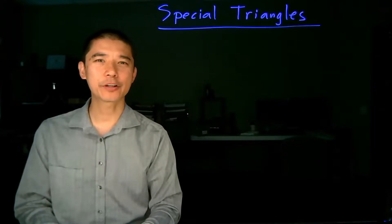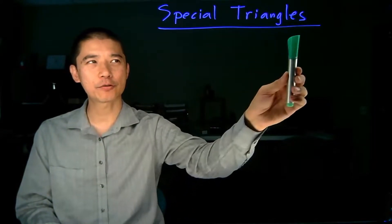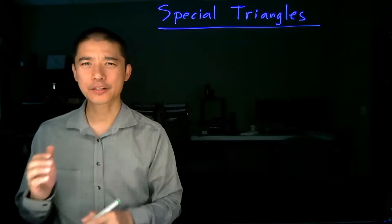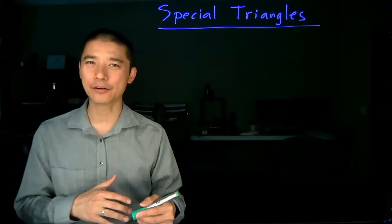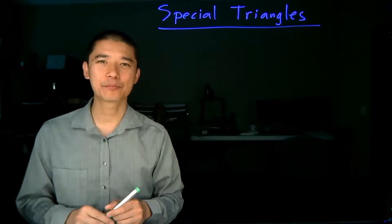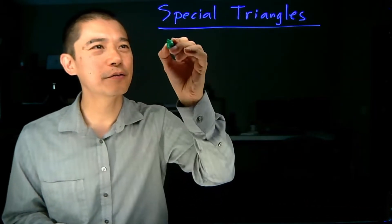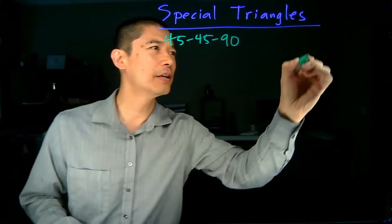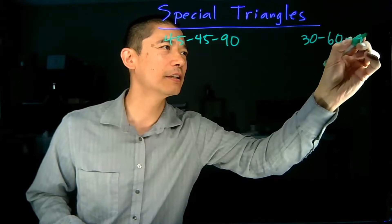Before talking more about trigonometry, we're going to take a quick detour and talk about some special triangles. These special triangles are important to trigonometry, but the stuff we're going to learn are things you could have learned a long time ago — all you need to know are some basic facts about triangles and the Pythagorean theorem. The two special triangles we're going to look at are the 45-45-90 triangle and the 30-60-90 triangle.